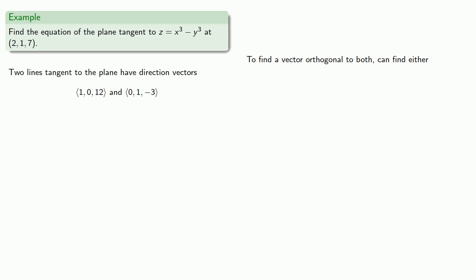To find a vector orthogonal to both of these, we can find their cross product. Now there's two different cross products we can take, and it doesn't really matter which one. So we'll find the second.